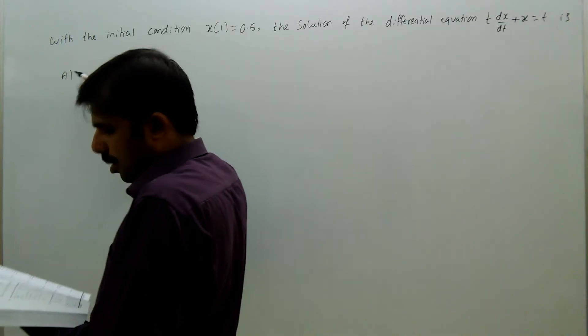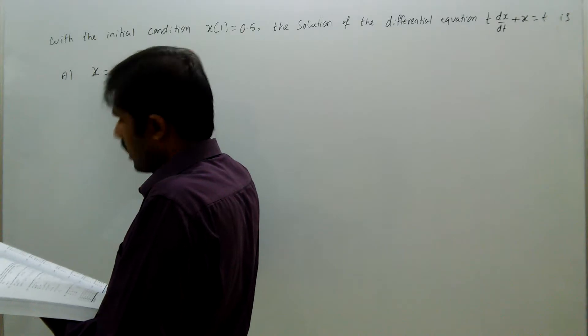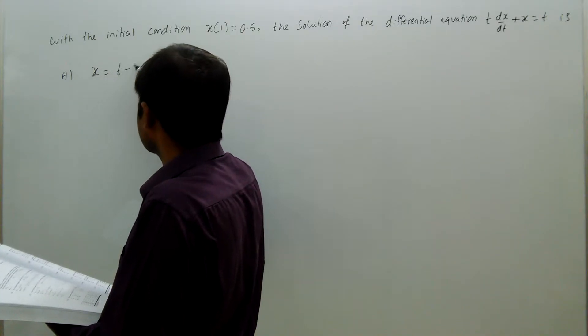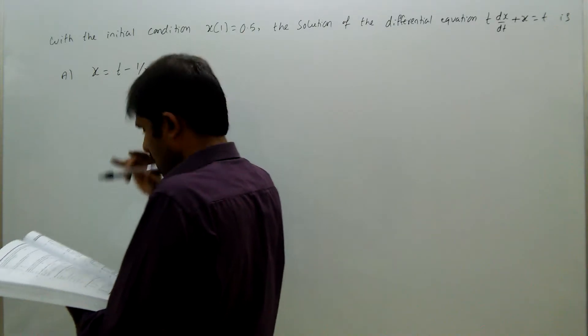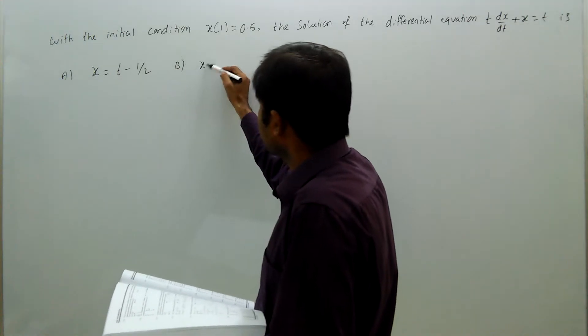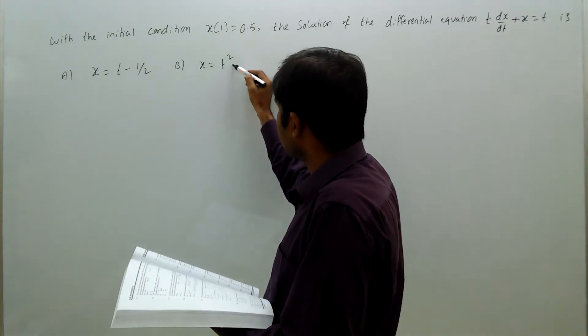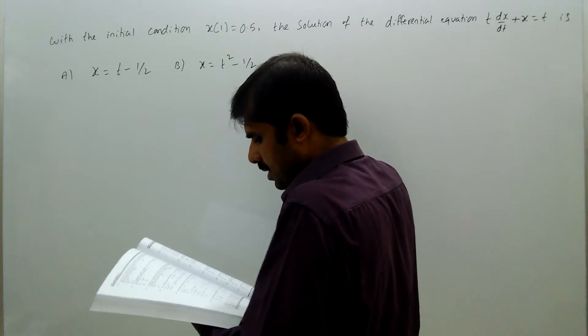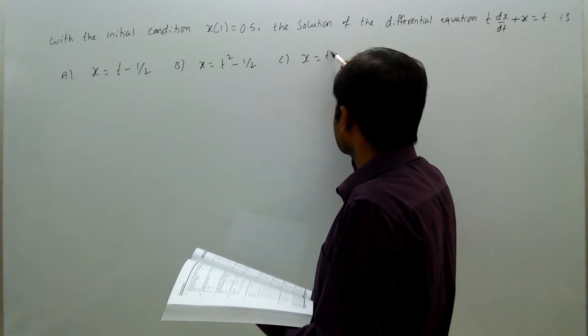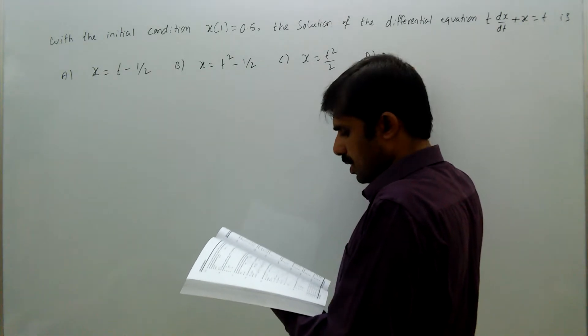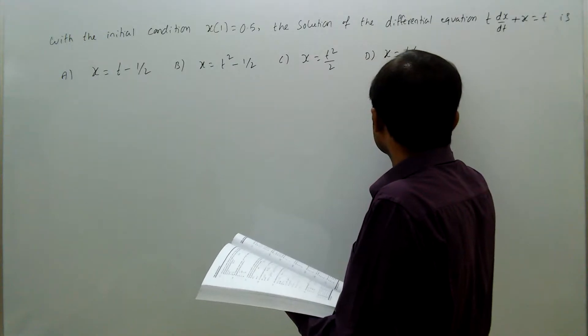Option a, x equal to t minus half. Option b, x equal to t square minus half. Option c, x equal to t square by 2. Option d, x equal to t by 2.